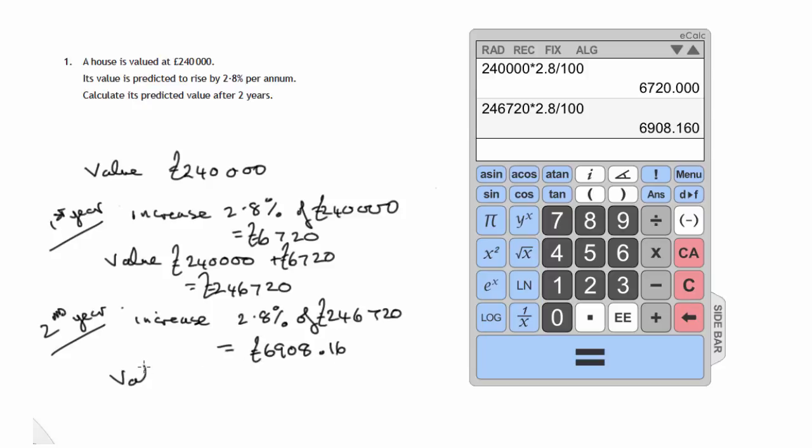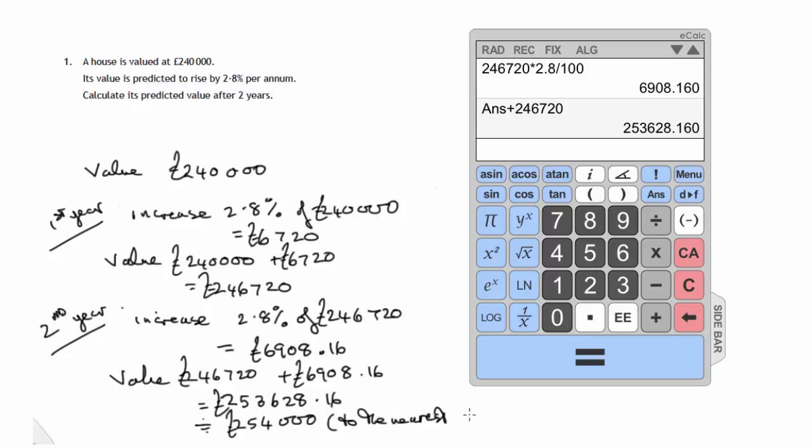So the value after these two years is £246,720 plus £6,908. So let's just add the £246,720 to that. And out pops the number that we had previously. £253,628.16. So that would be approximately £254,000 to the nearest £1,000 as we had before.